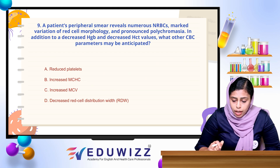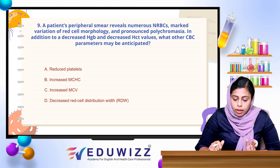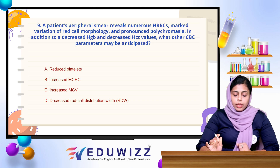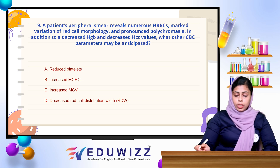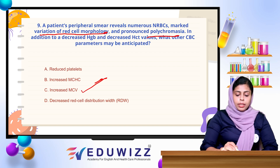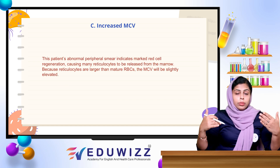Next question: a patient's peripheral smear reveals numerous NRBCs, marked variation of red cell morphology, and pronounced polychromasia. In addition to decreased HB and decreased HCT, what other CBC parameters may be anticipated? The answer is increased MCV. The reason for increased MCV relates to red cell morphology variation and polychromasia — there is a chance for increased MCV due to peripheral smear marker regeneration.